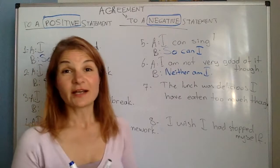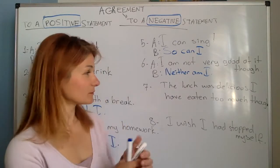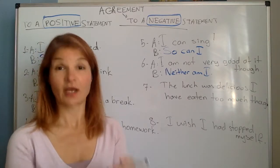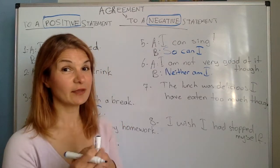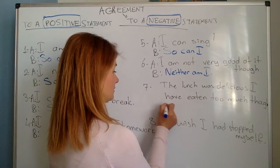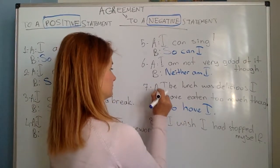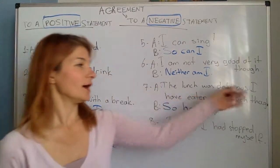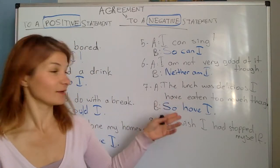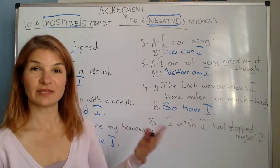Number seven: the lunch was delicious, but I have eaten too much. You have eaten too much as well, so you say: so have I. The auxiliary in 'I have eaten too much' is 'have' — present perfect tense — so: so have I.